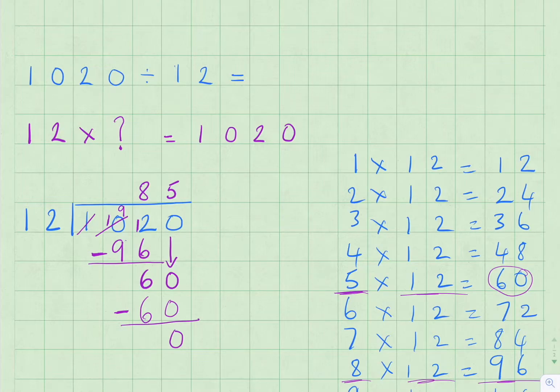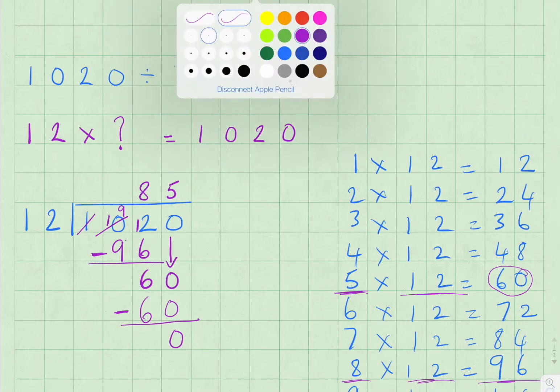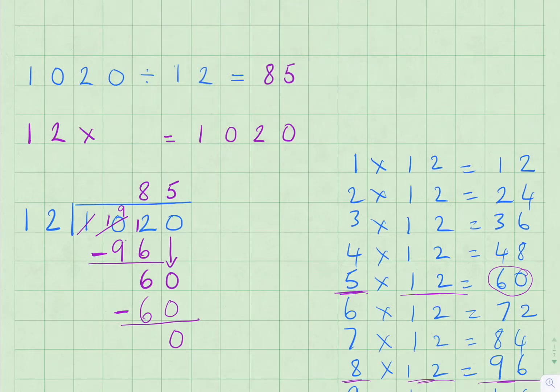1020 divided by 12 is 85, and we can say that 12 times 85 equals 1020.